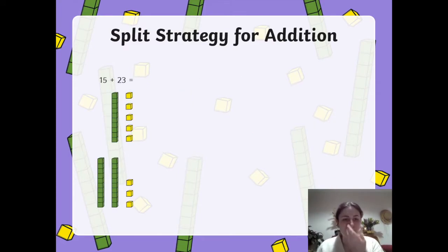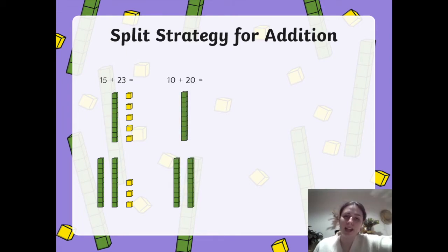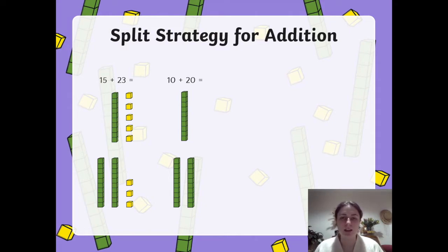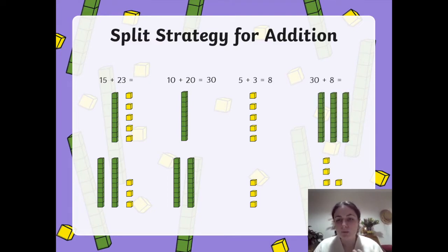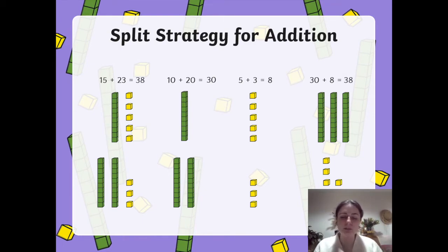Here we've got another one. We've got 15 and 23. This time we've got 10 and then 20 at the bottom, so we're breaking up the tens into the groups again and that equals 30. Same again, we've broken our ones off so we've got five ones and then three ones, we've added them together and that equals 8. Then we add them all together and we've got our answer of 38. So we're breaking apart to pull back together.